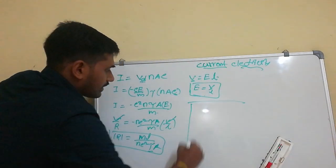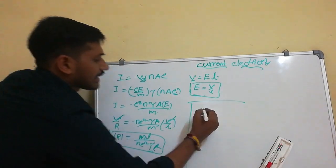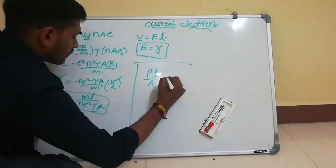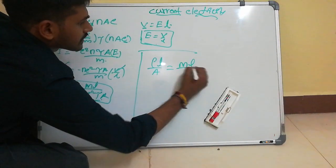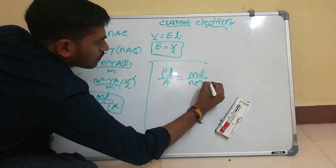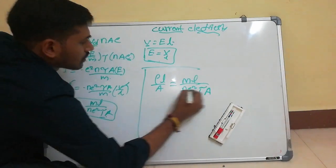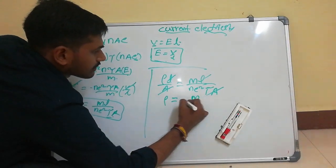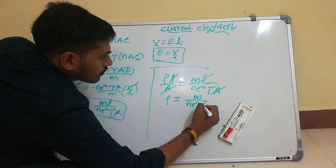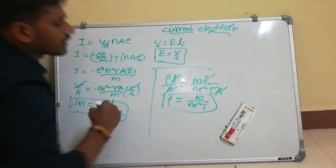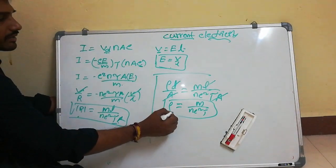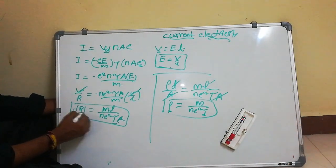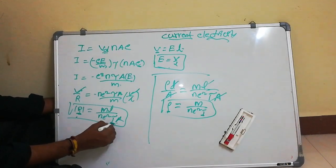What is the relation between resistivity and relaxation time? We know R = ρL/A = mL / (Ne²τA). The L's cancel and the A's cancel, giving rho = M / (Ne²τ). This is the relation between resistivity and relaxation time.